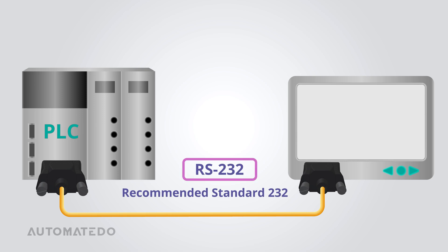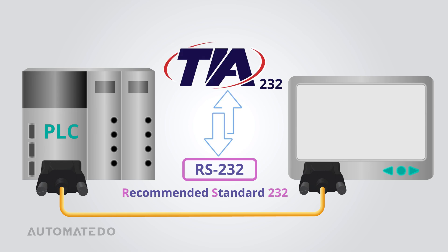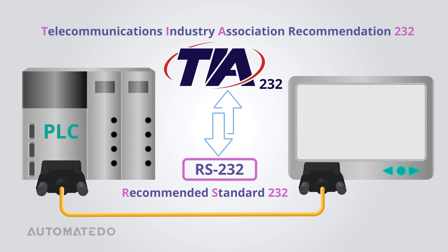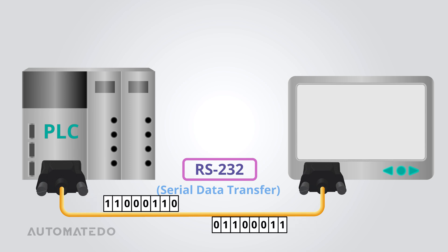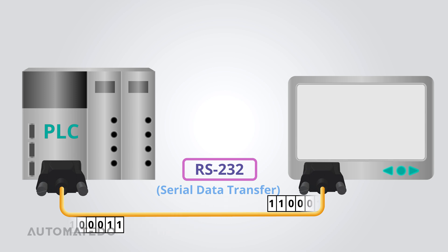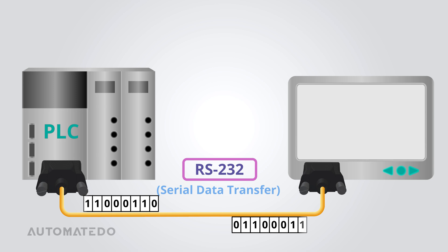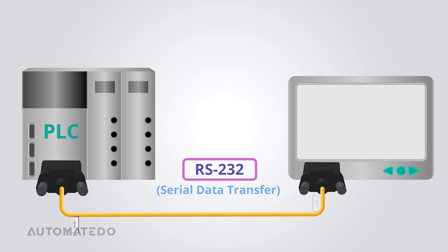RS-232 is an acronym that signifies the Recommended Standard 232. Nowadays, RS-232 is recognized under the name TIA-232, with TIA representing Telecommunications Industry Association Recommendation 232. RS-232 functions as a serial data transfer standard — a communication method for exchanging data. Serial data transmission refers to sending data bit by bit in a consecutive order across the communication path.